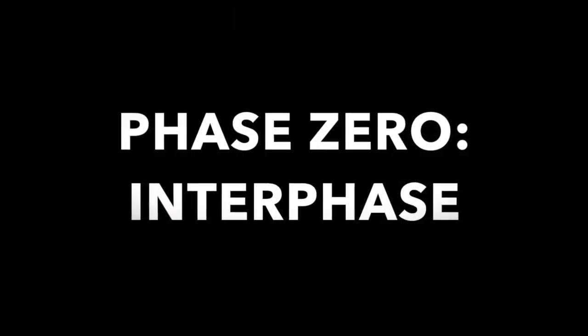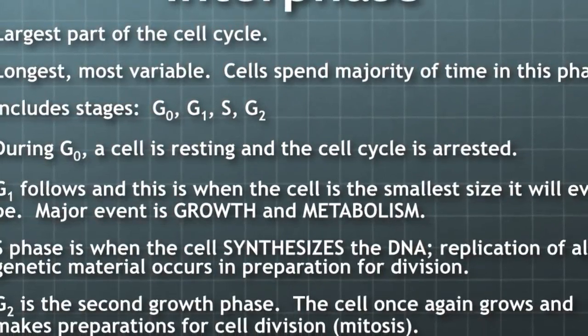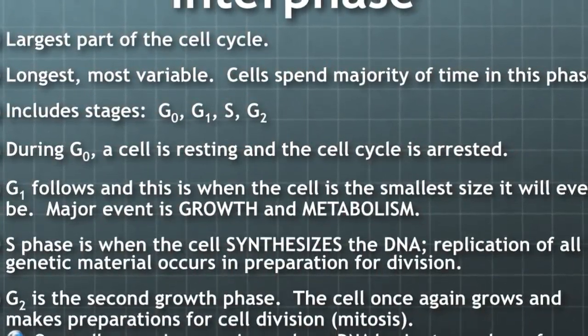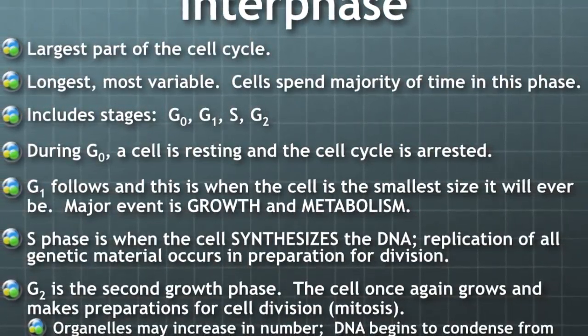Interphase is the first thing that occurs before mitosis. The cell stays in this phase for the longest period of time. Interphase has three sub-phases: G1 or GAP1, S, and G2.